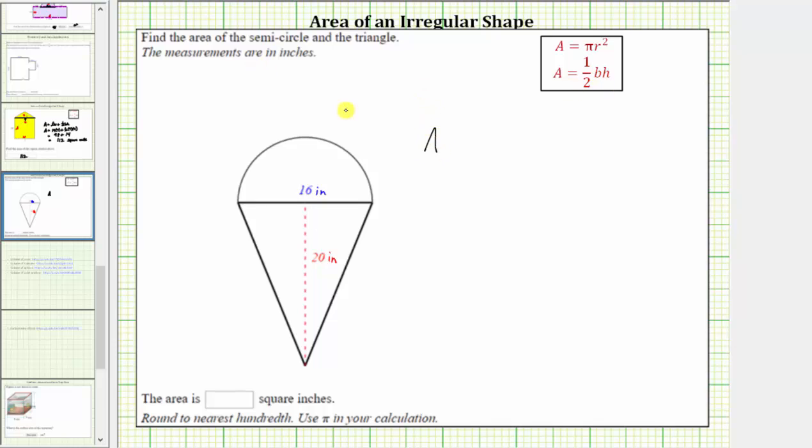which means the total area is equal to the area of the semicircle, which again is 1/2 pi r squared, plus the area of the triangle, which is 1/2 base times height.